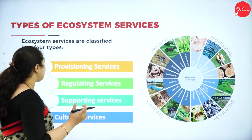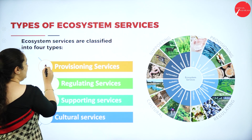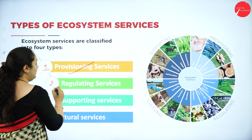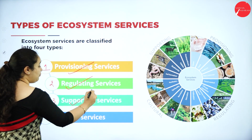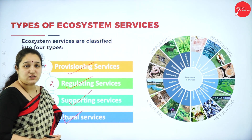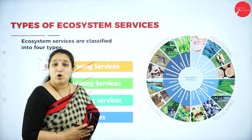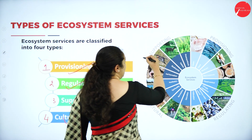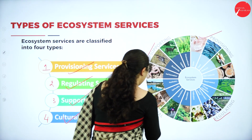Ecosystem services can be classified into four types: the first one is provisioning services, the second is regulating services, the third is supporting services, and the fourth is cultural services. So the services we derive from ecosystems can be broadly classified into four different types: supporting, provisioning, regulating, and cultural.